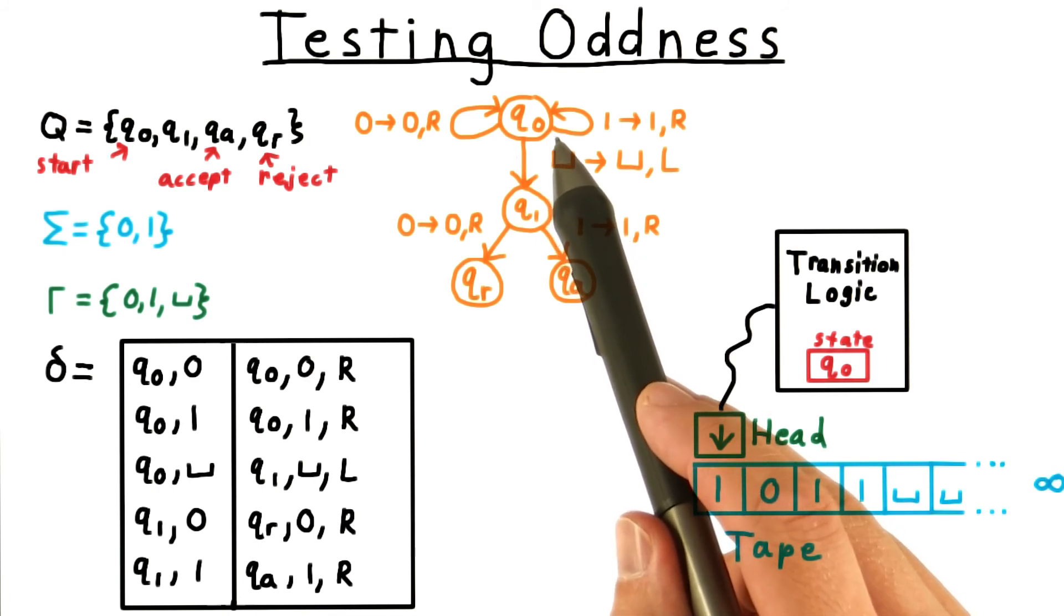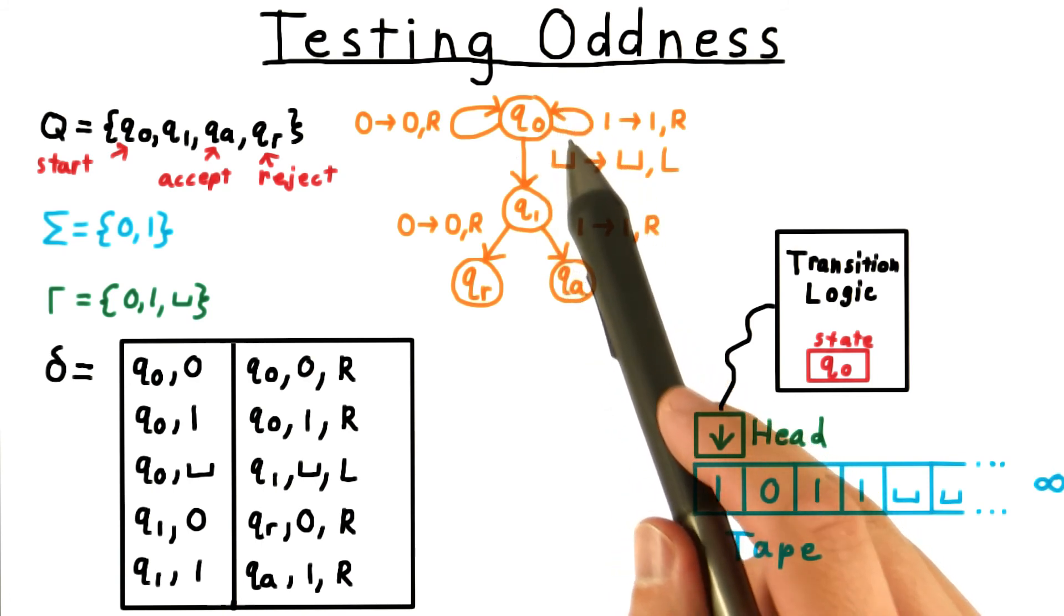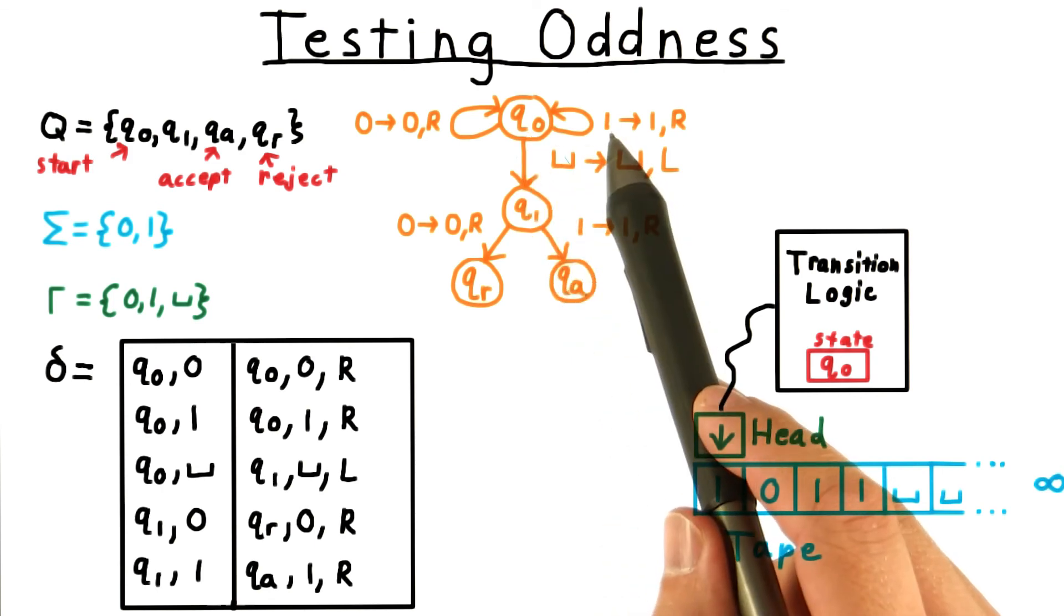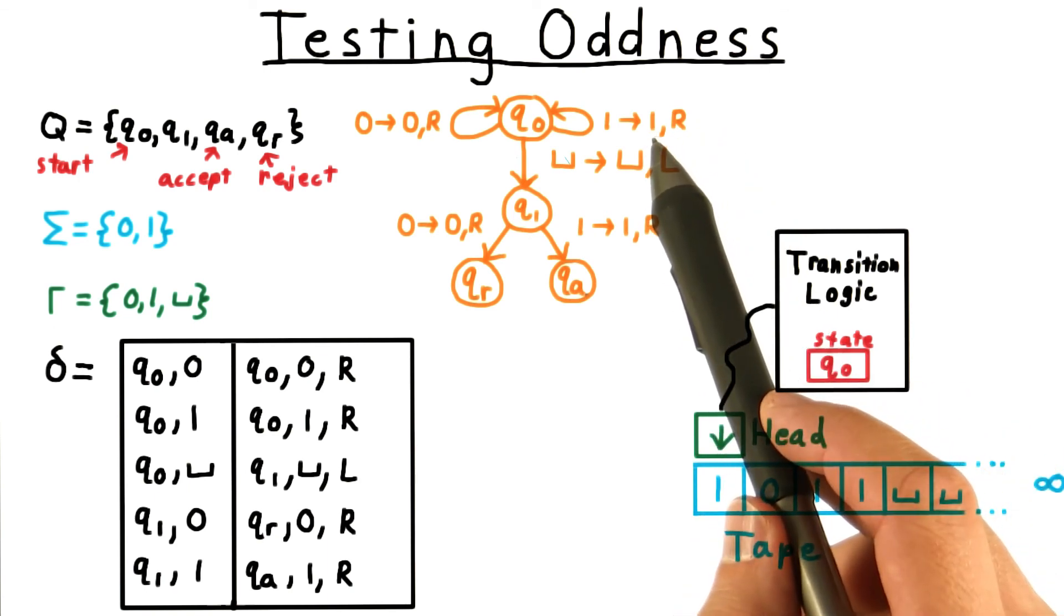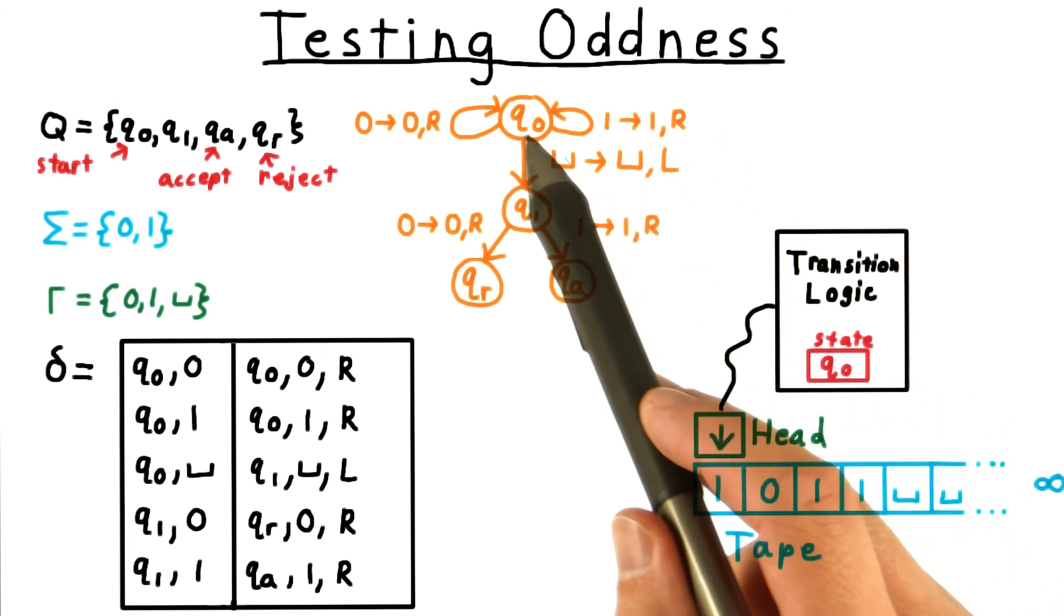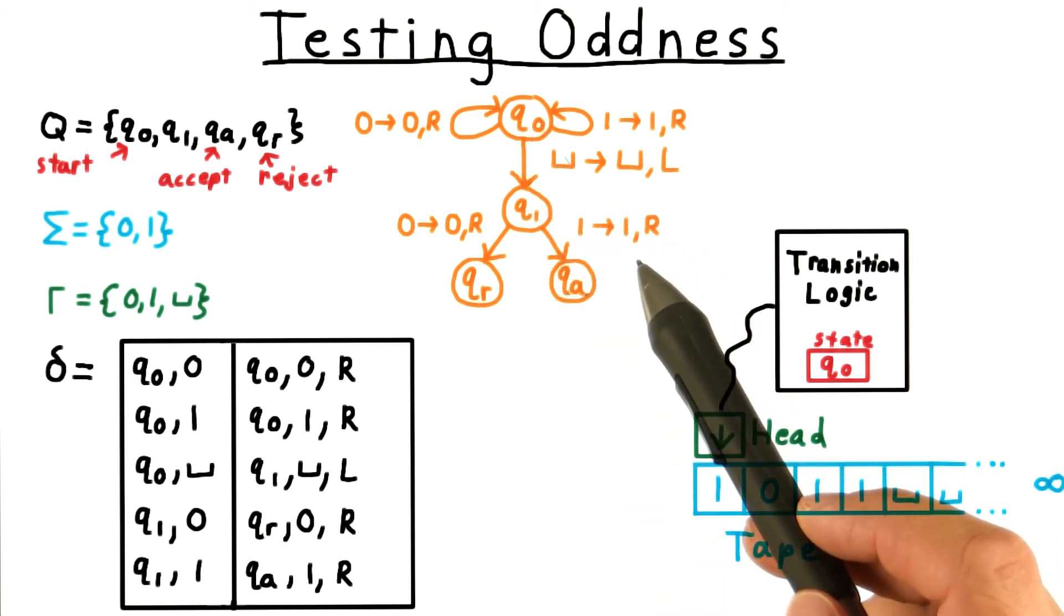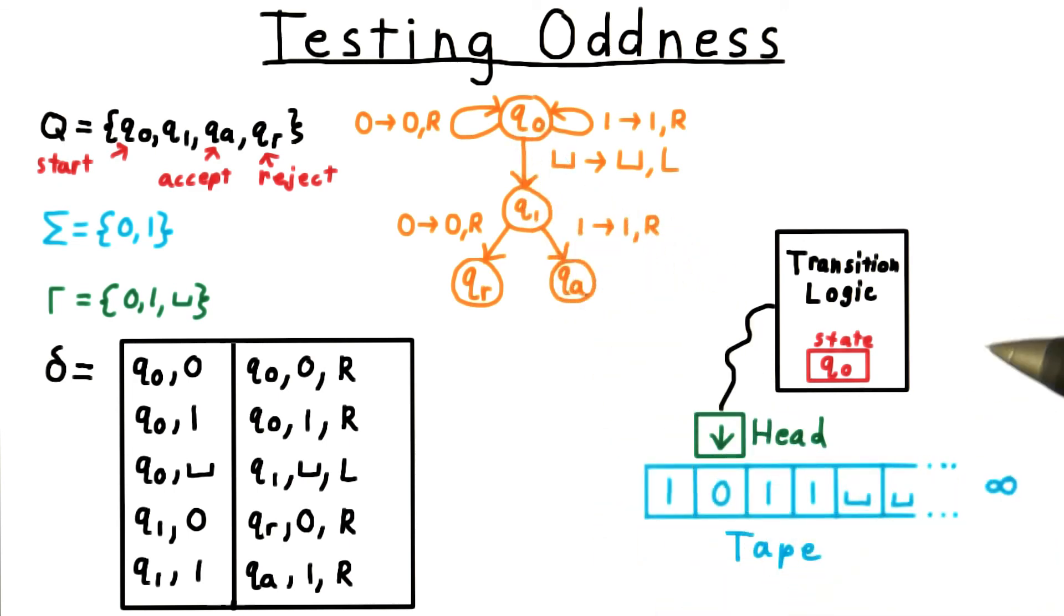In here, I see that I should follow this edge, since that has state q0, and we read a 1. And this transition tells me that I should write a 1, or leave the tape alone, and move the head to the right, and change the state to q0. So let's go ahead and update our figure. We're still in state q0, and the position of the head has been moved one space to the right. So this becomes our new configuration.